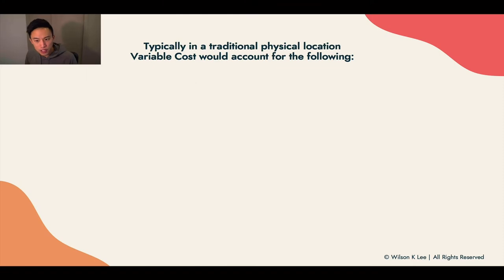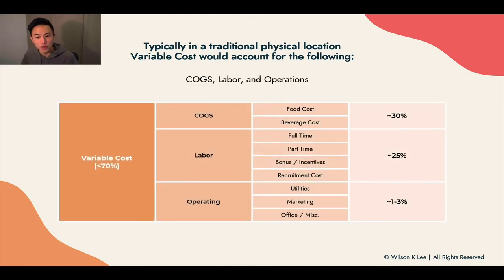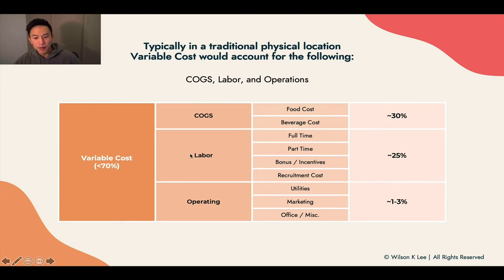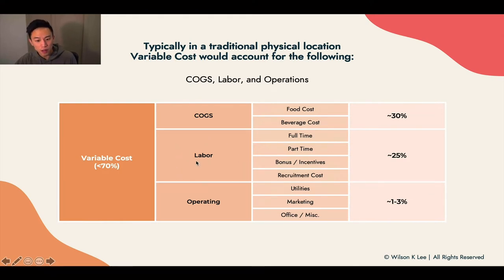In a traditional setting, variable costs would account for all these items here. Cost of goods sold, which is basically your ingredient costs — food costs, beverage costs, sauces, and all those kinds of things. And then labor. Depending on how many people you hire, you can have part-times and full-times. You'd have your bonuses, incentives, recruitment costs, and all these would be calculated as variable costs because as more people enter your restaurant, you need more help. And thus, this is a variable cost.